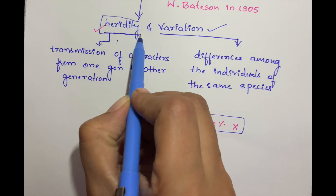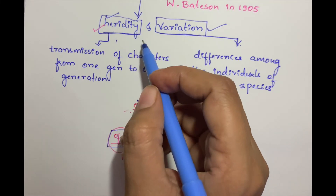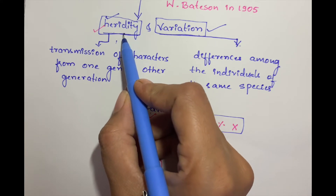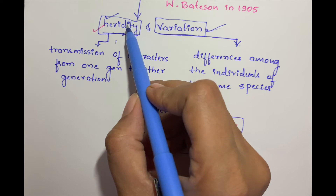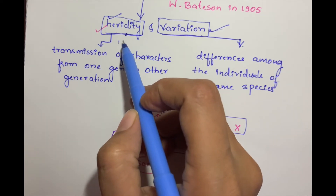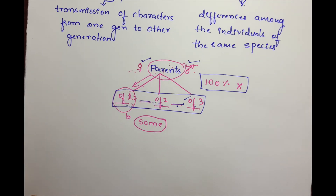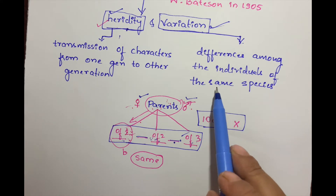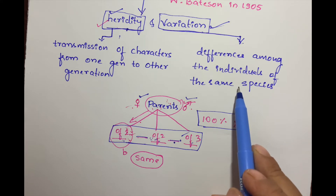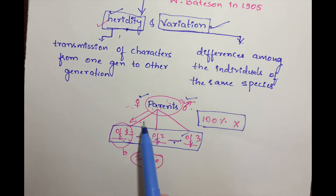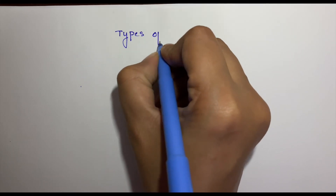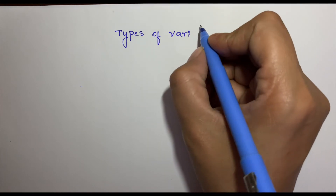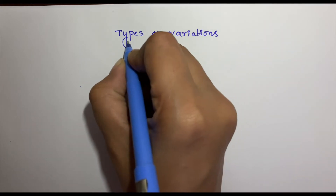Heredity needs to be dealt with in very great detail as compared to the syllabus, whereas variation is a smaller topic. So we will first complete the variations and then move to heredity, which forms the entire chapter. Variation is differences among individuals of the same species, or differences between children of the same parents. Now let us look at the types of variations.